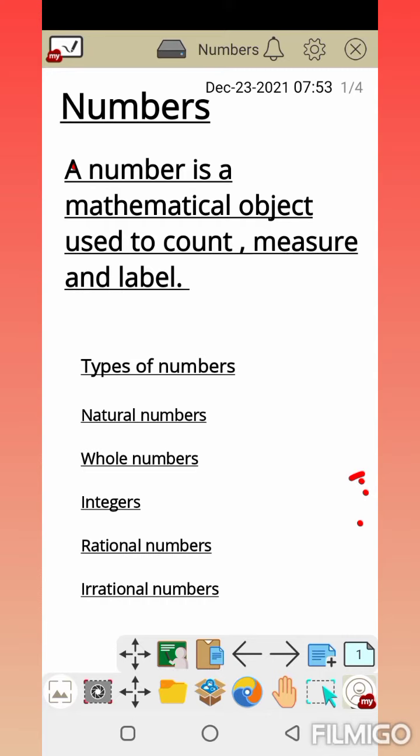Numbers are used to count, measure, and label. Like if we take a rectangle and want to tell the length and breadth, we use numbers. For example, length 2 and breadth 2, the area is 2 multiplied by 2, which equals 4.